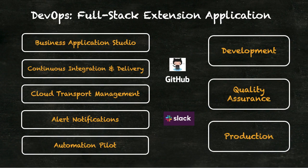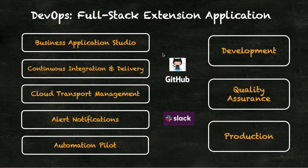We'll want to develop our application using Business Application Studio. We'll also use GitHub as our source code repository. We're going to use continuous integration and delivery as a means of taking our source code, building it out, testing and validating, and then deploying our project.